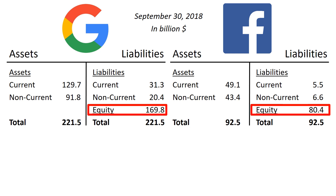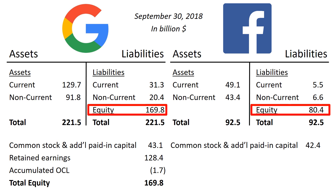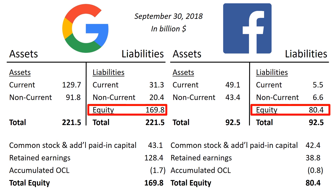What is interesting to analyze is what makes up the equity balance. For Alphabet Inc.: common stock and additional paid-in capital $43.1 billion, retained earnings $128.4 billion, accumulated other comprehensive loss of minus $1.7 billion, making up total equity of $169.8 billion. For Facebook: common stock and additional paid-in capital $42.4 billion, retained earnings $38.8 billion, accumulated other comprehensive loss of minus $0.8 billion, making up total equity of $80.4 billion.